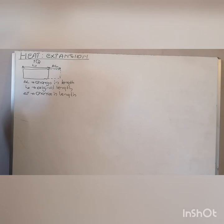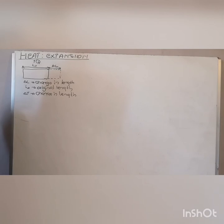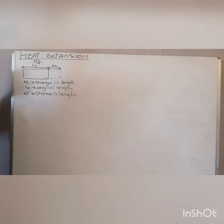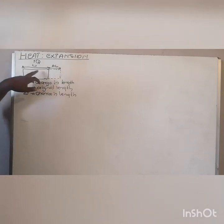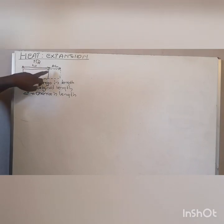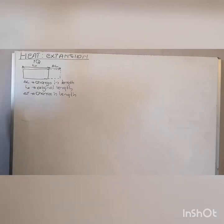If you add heat, your material will expand, and if you remove your heat it will contract — so it decreases with a decreasing temperature and increases with an increasing temperature. Our calculation depends on the material behavior due to a change in heat. This was the original length, and due to a change in heat, there was an expansion — my material expanded by this amount.